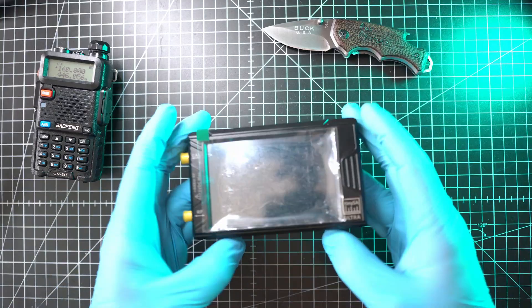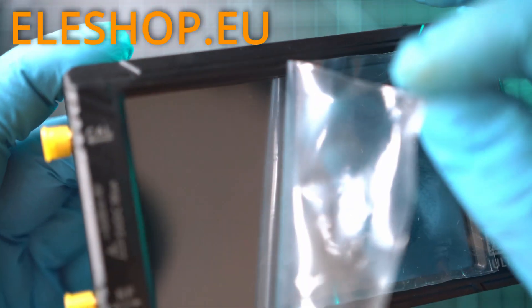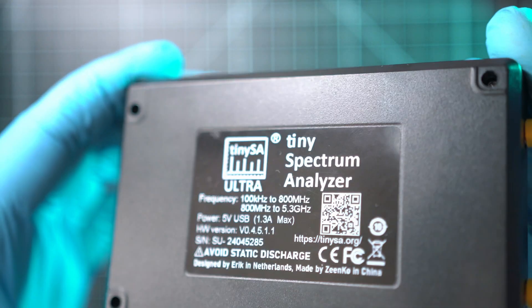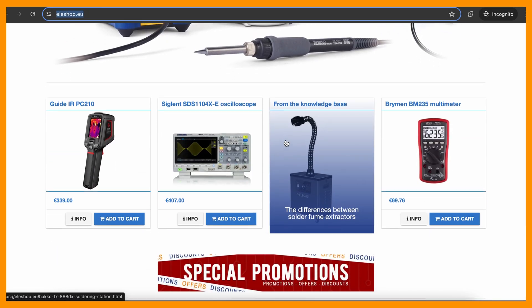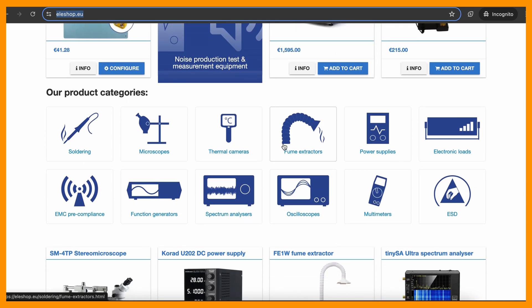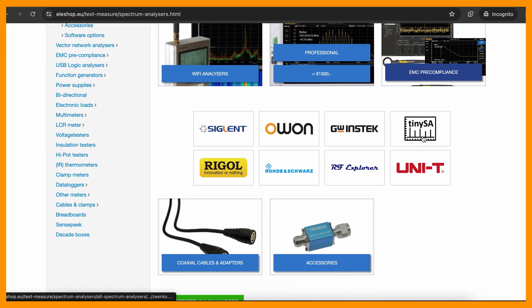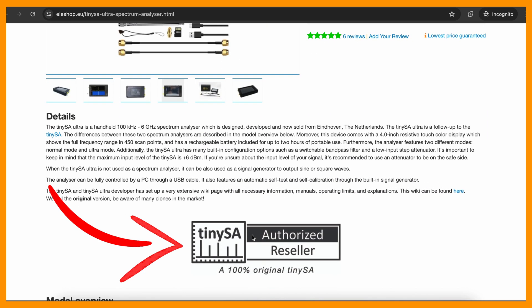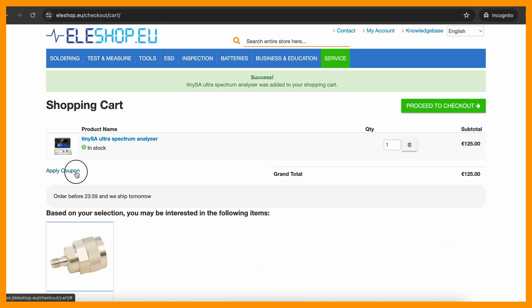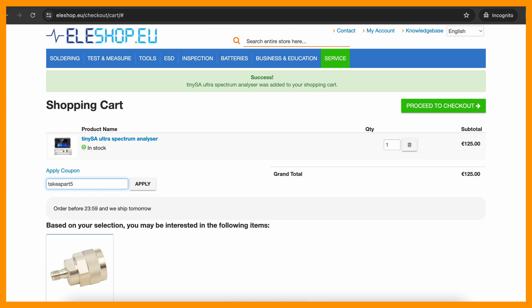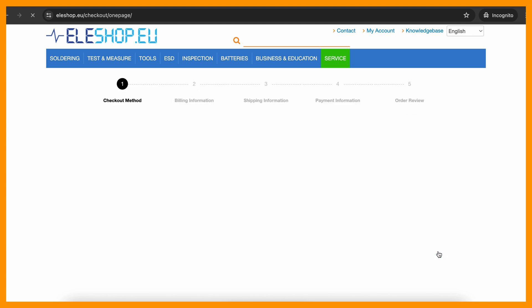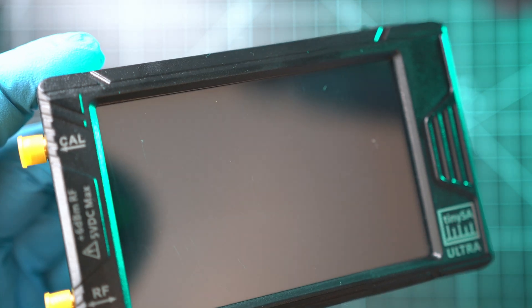I'm using TinySA Ultra that came from ELEshop.eu, one of the few authorized resellers of TinySA devices. ELEshop.eu has everything you will ever need from hobby to full-blown professional equipment. They are shipping worldwide, so make sure to check them out. Also use coupon code TAKAPARTH5 at checkout to get 5% discount on selected devices. Link in description below.